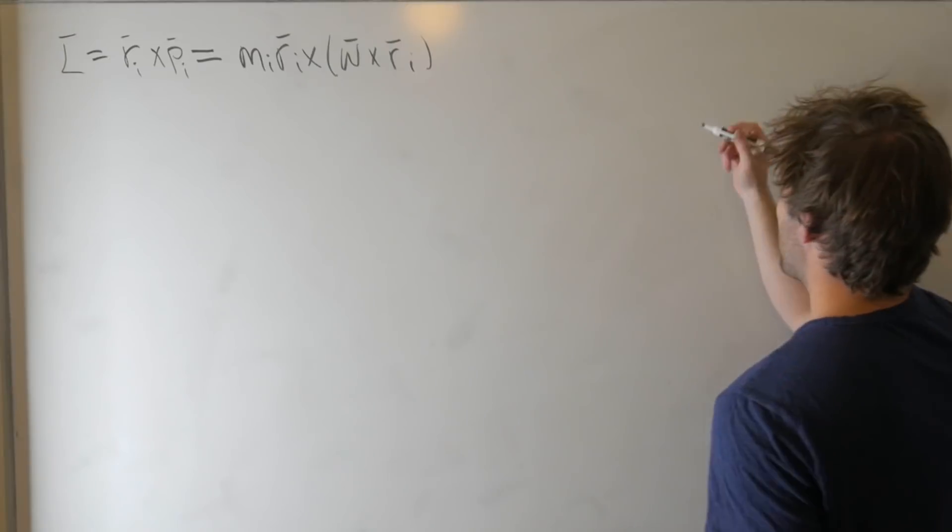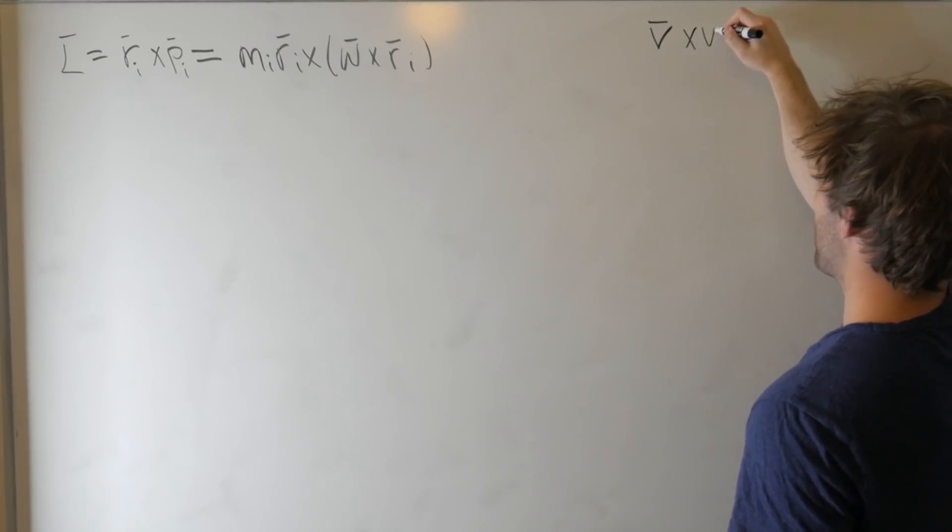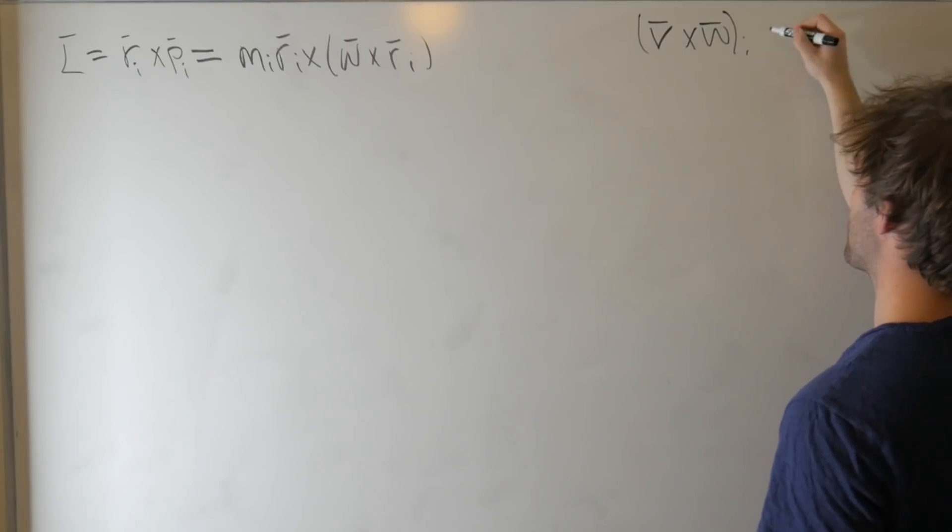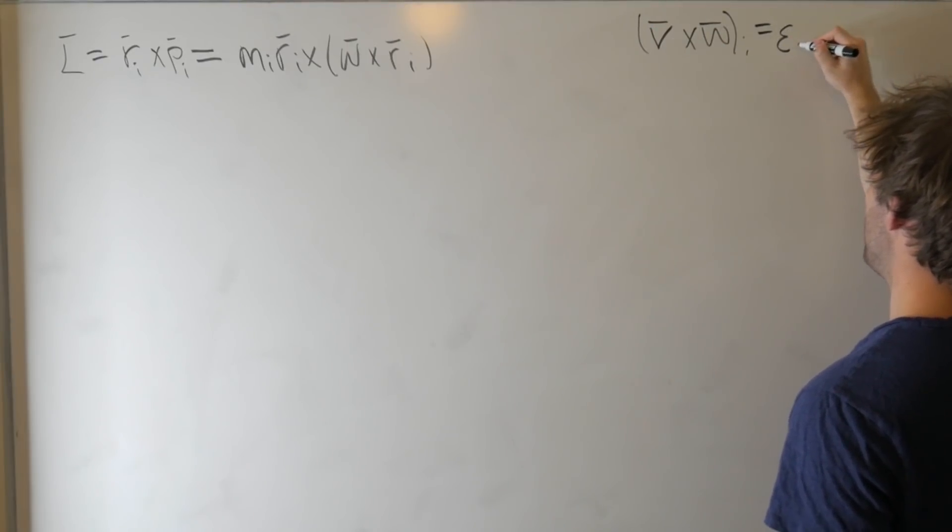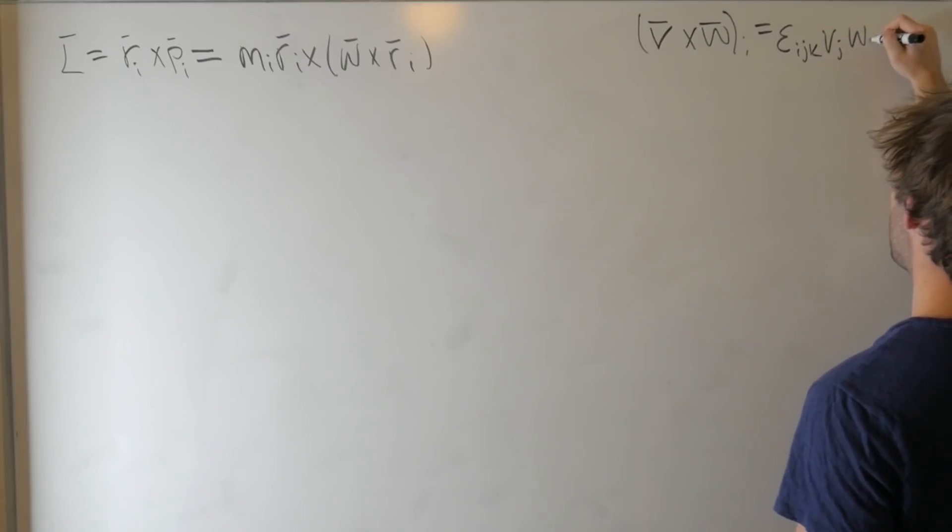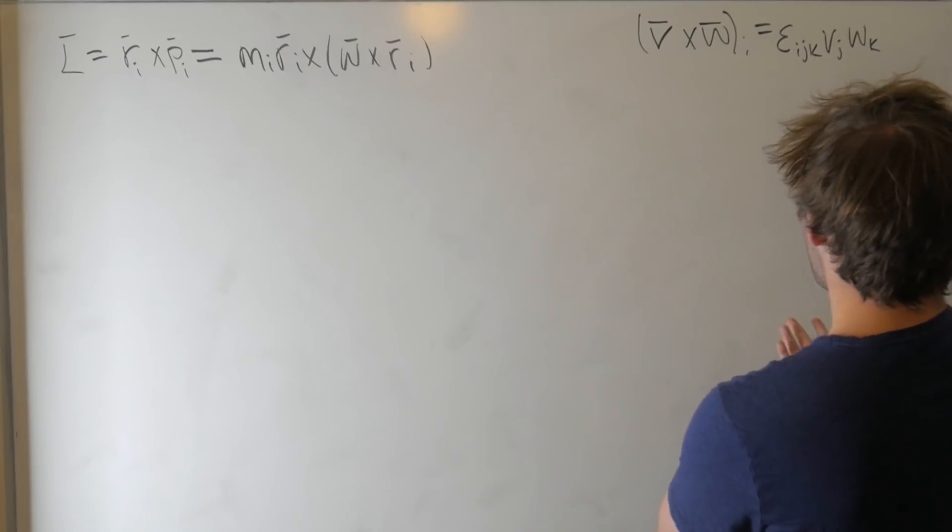So for regular cross product, if we have, say, some vector V cross W, we can find the i-th component of this cross product, and say that that is epsilon_ijk v_j w_k. So this is important.